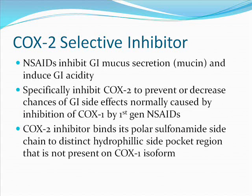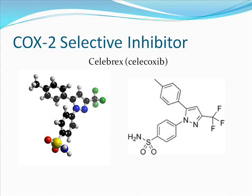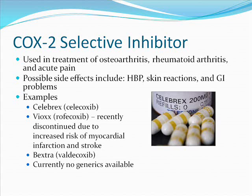COX-2 selective inhibitor NSAIDs inhibit GI mucus secretion, also known as mucin, and induce GI acidity. Specifically, they inhibit COX-2 selectively to prevent or decrease chances of GI effects normally caused by inhibition of COX-1 by first-generation NSAIDs. COX-2 inhibitors bind their polar sulfonamide side chain to distinct hydrophilic side pocket regions not present on the COX-1 isoform. An example is Celebrex. COX-2 selective inhibitors are used in treatment of osteoarthritis, rheumatoid arthritis, and acute pain. Possible side effects include high blood pressure, skin reactions, and GI problems. Vioxx was recently discontinued due to increased risk of myocardial infarction and stroke, and Bextra currently has no generics available.